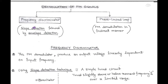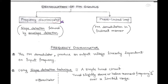In frequency discriminator, there is both slope as well as envelope detection. The phase locked loop is the indirect method for the generation of FM wave and it is a widely used method. So first we talk about frequency discriminator.